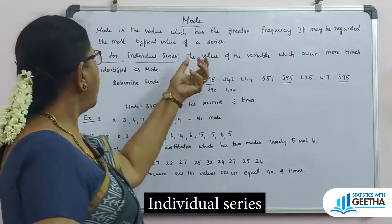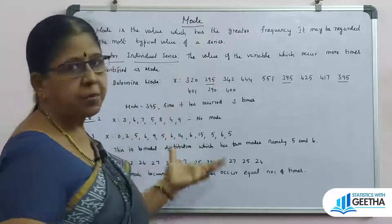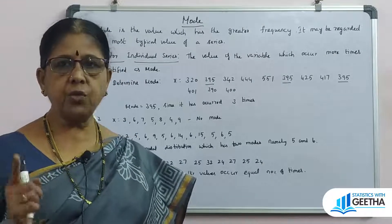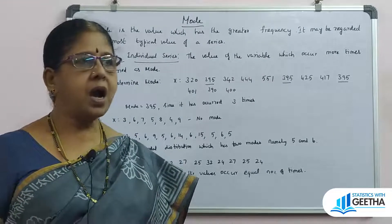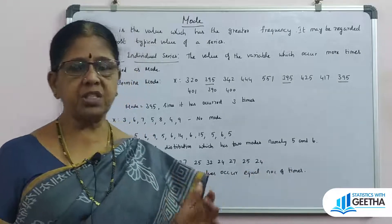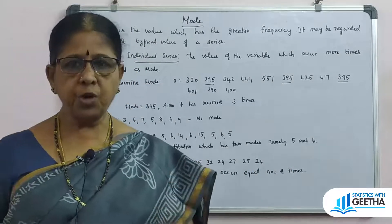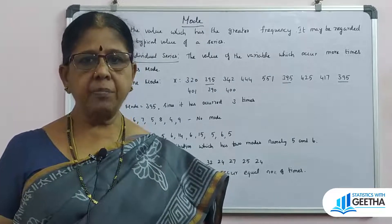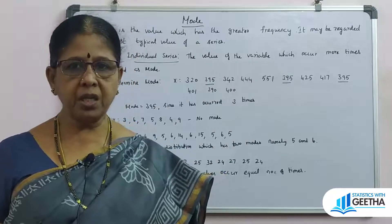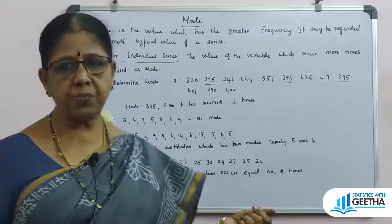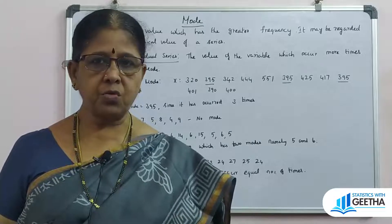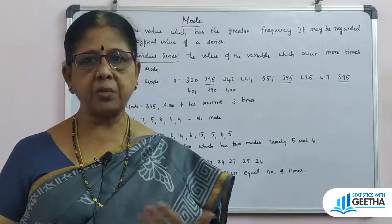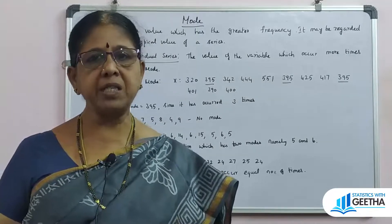For mode in an individual series, a distribution can have one mode, two modes, or three modes. If one mode exists, it is unique — called unimodal. If there are two modes, it is bimodal; three modes is trimodal; and a distribution with more modes is called a multimodal distribution.